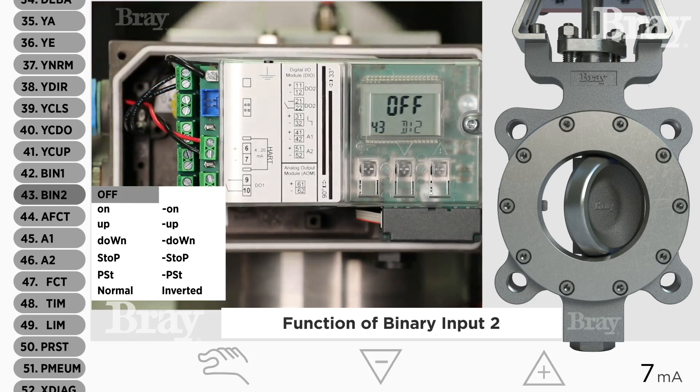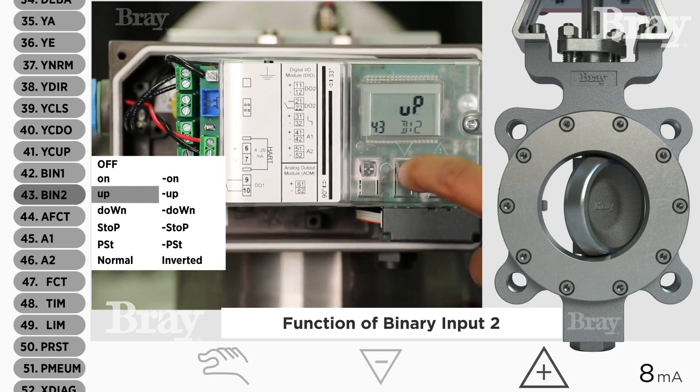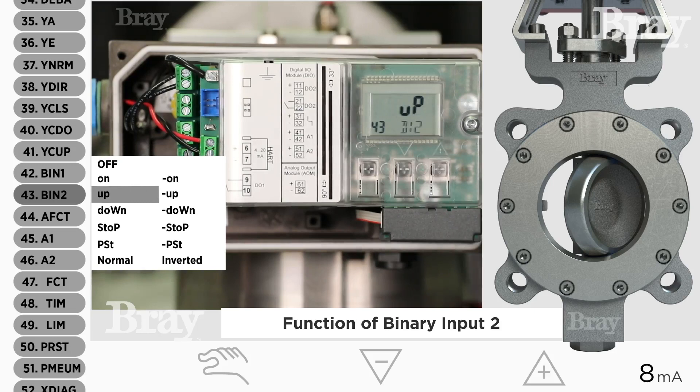Right now it's set to off. What we're going to do is move this to up, and what this is instructing the positioner to do is when it receives the 13 volt signal or the binary input signal, it's going to go open.